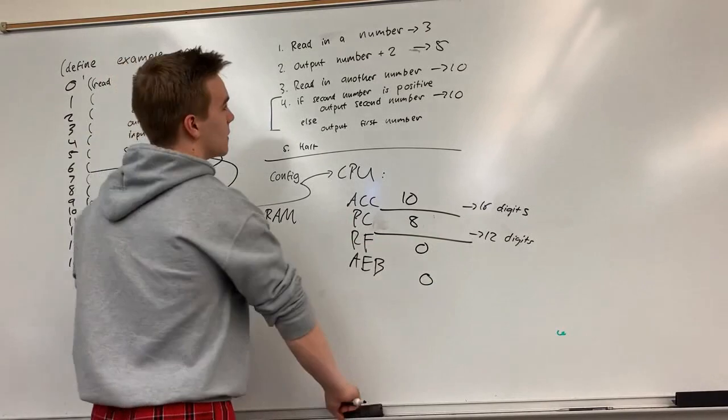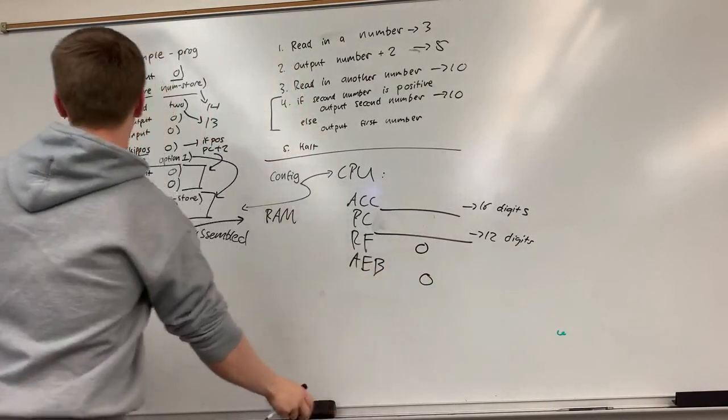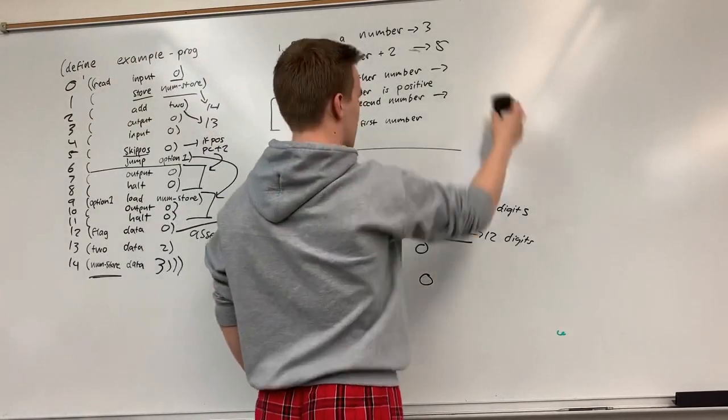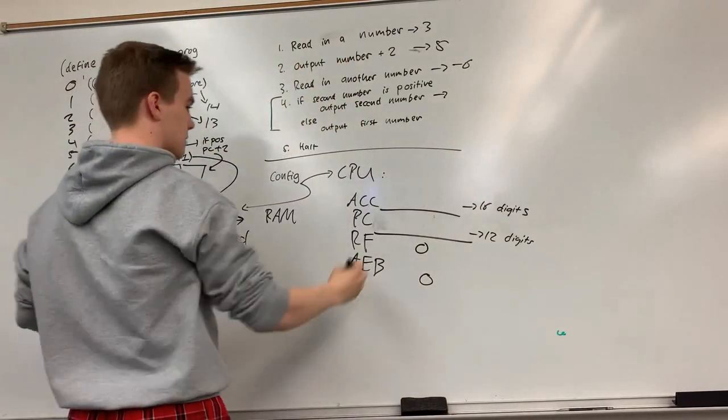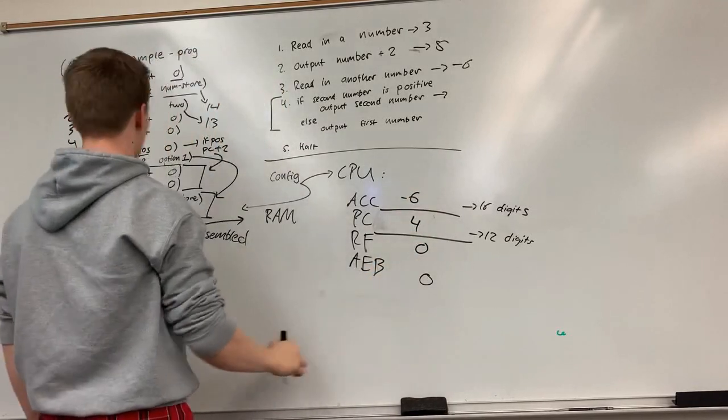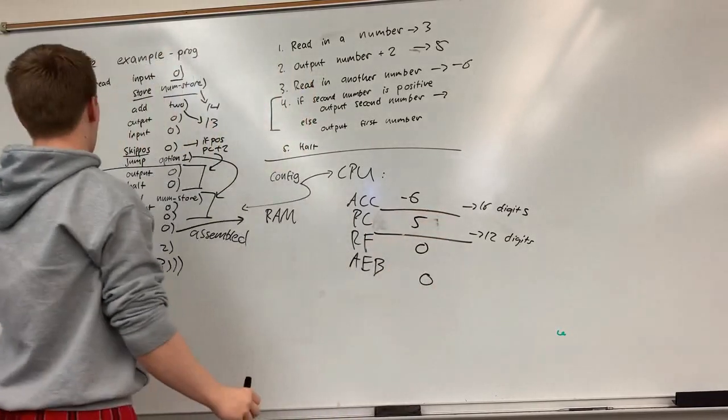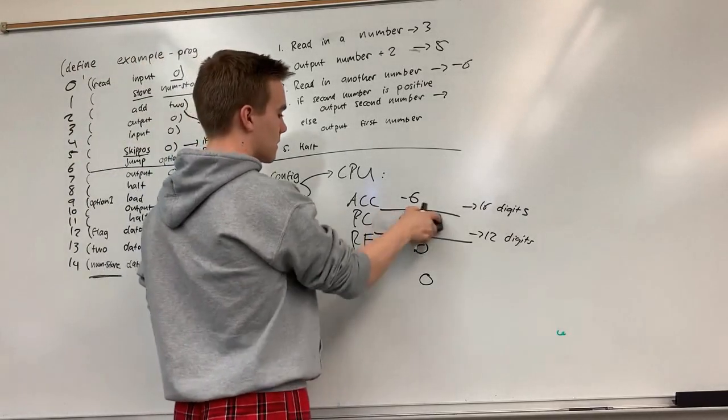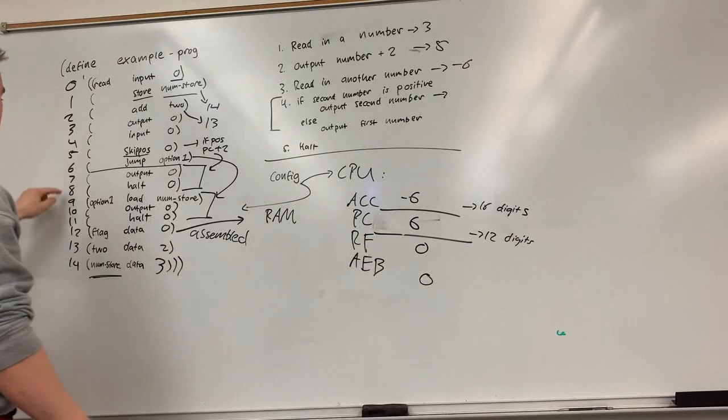If my second number was kind of reversed a little bit. Let's say that I was at four, and I gave it the number negative six. So my PC was at four, I read in negative six, my PC would go to five. I would skip if positive, it's not positive. So I would go to six, leaving my accumulator alone.